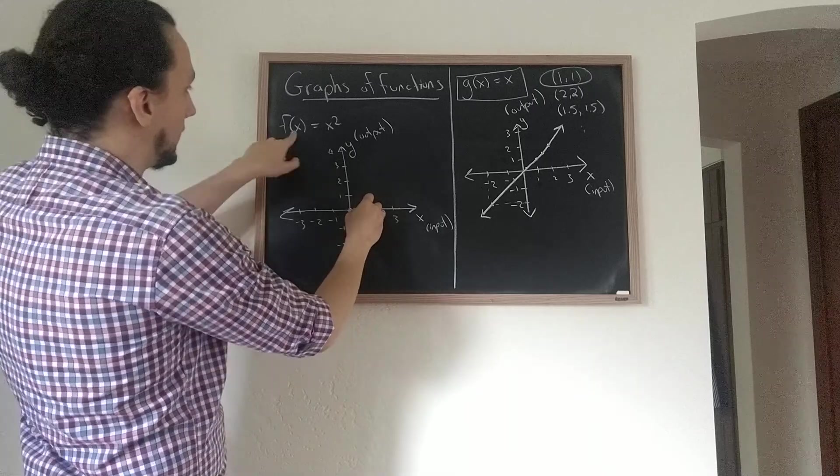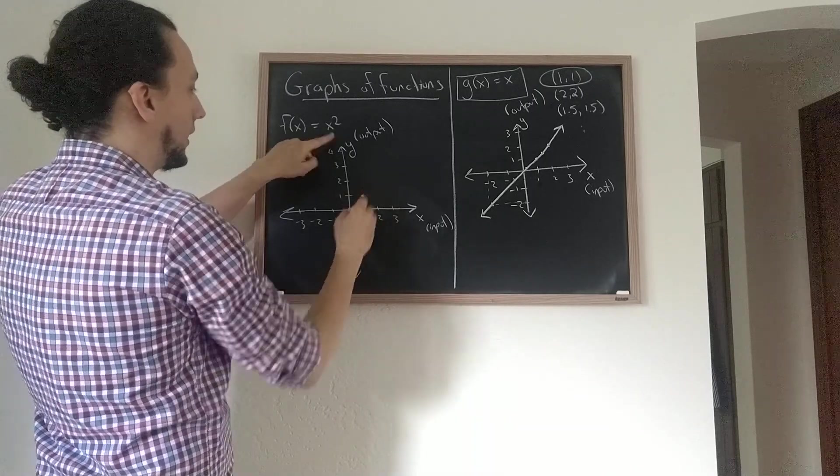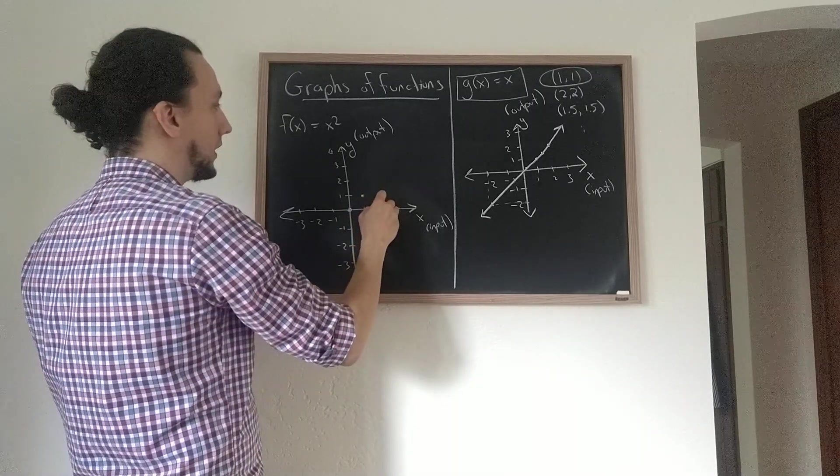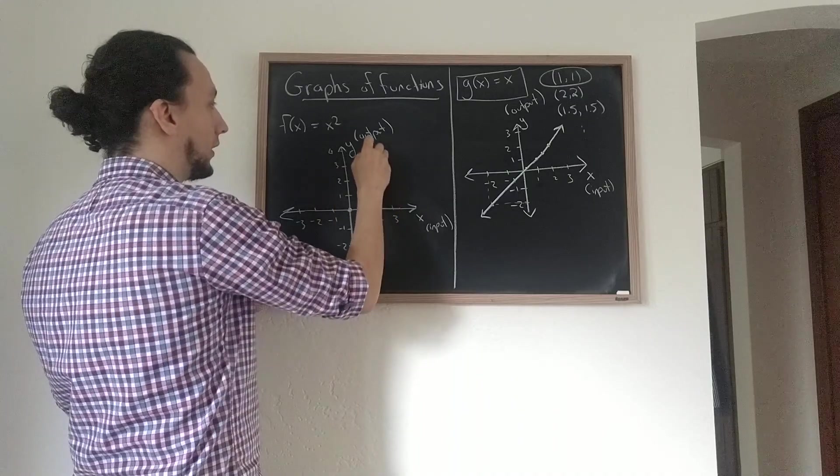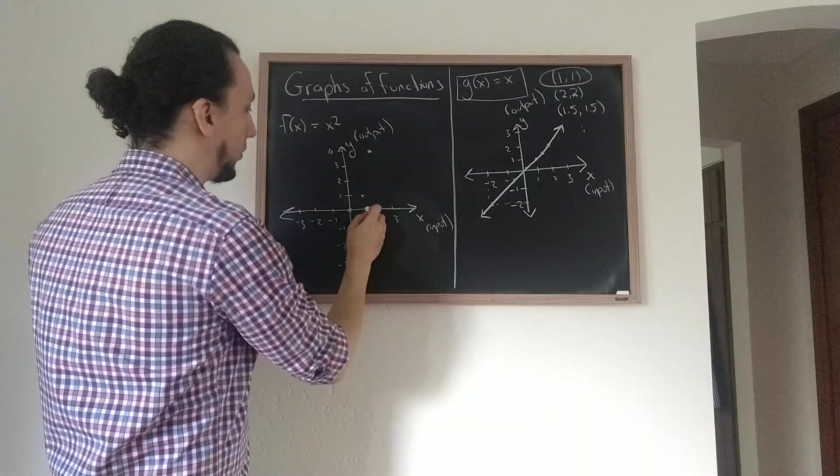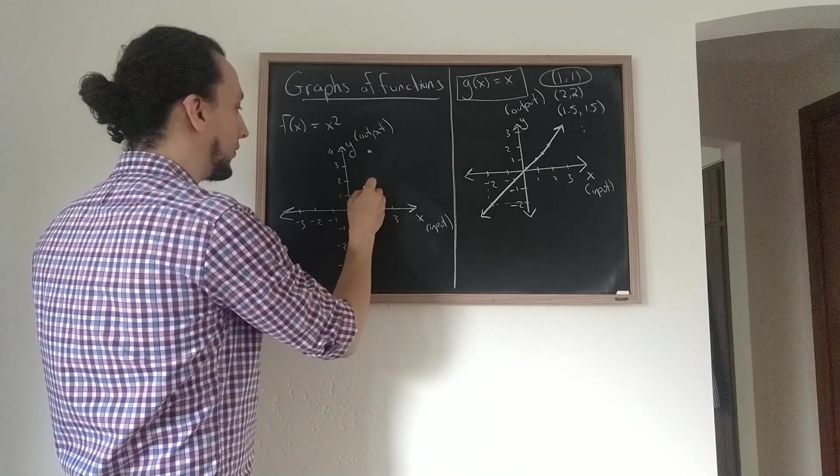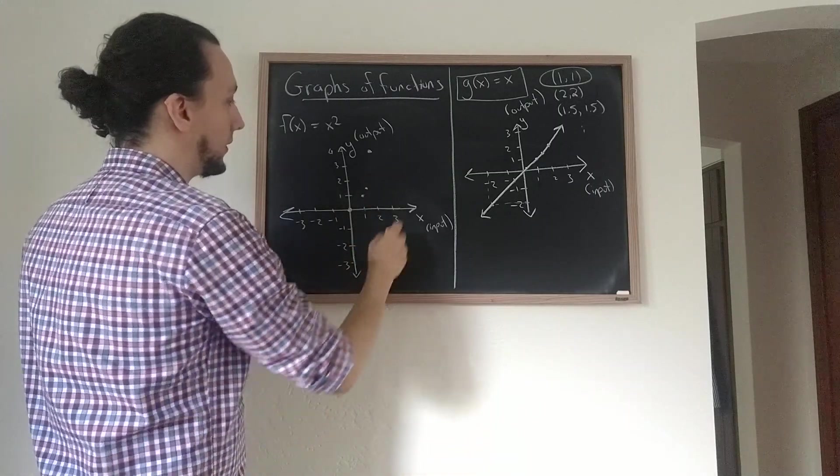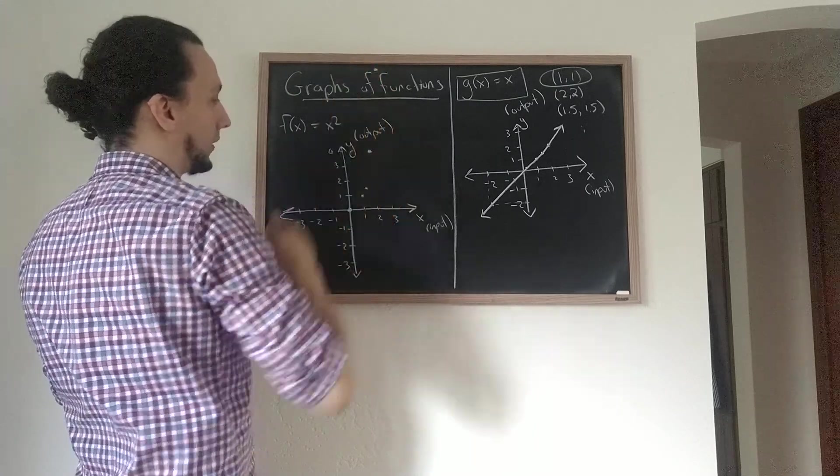For example, when the input is 0 the output is 0. When the input is 1 the output is 1. When the input is 2 the output is 4. We saw before that when the input is 1.2 the output is 1.44.